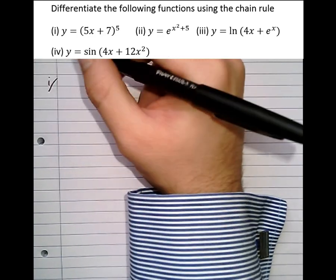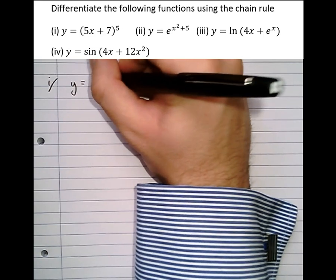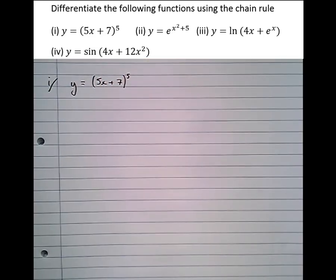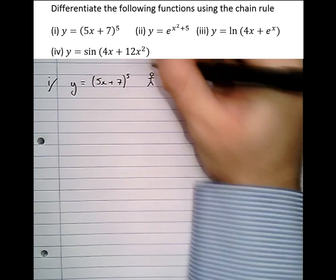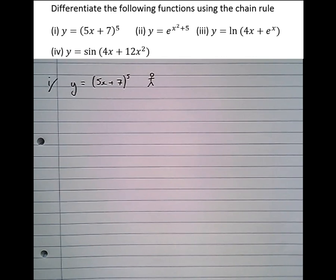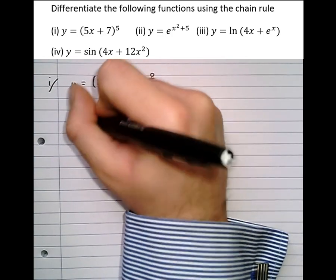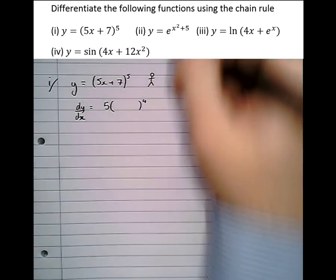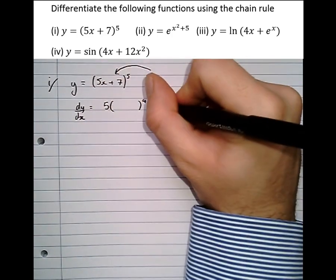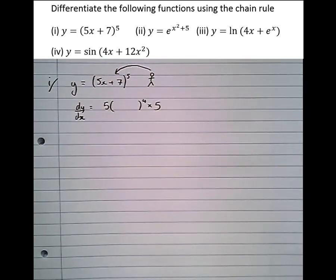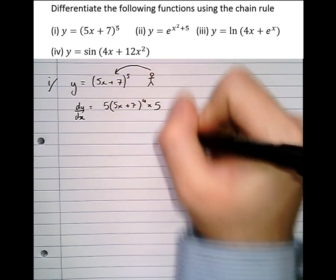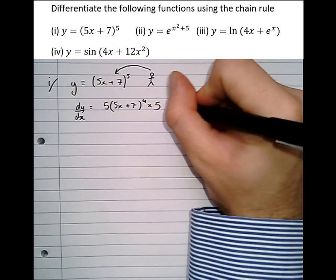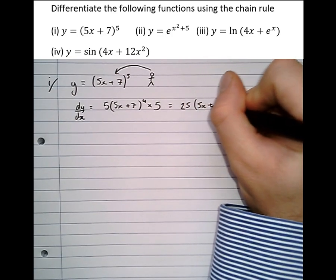So the rule for differentiating functions of functions: take y equals 5x plus 7 to the power of 5. Imagine someone standing outside that bracket — all they can see is a bracket to the power of 5. So they do the best they can: something to the power of 5 becomes 5 times something to the power of 4. Then, dissatisfied, they look inside the bracket and multiply by its differential.